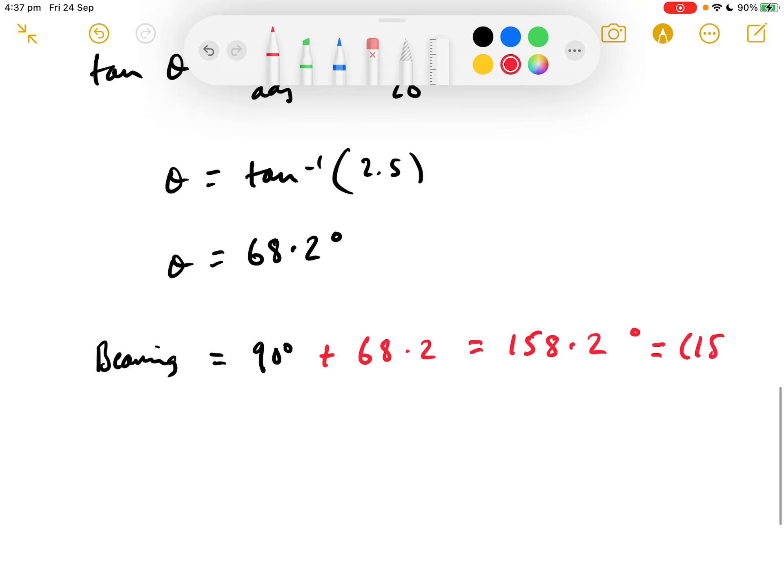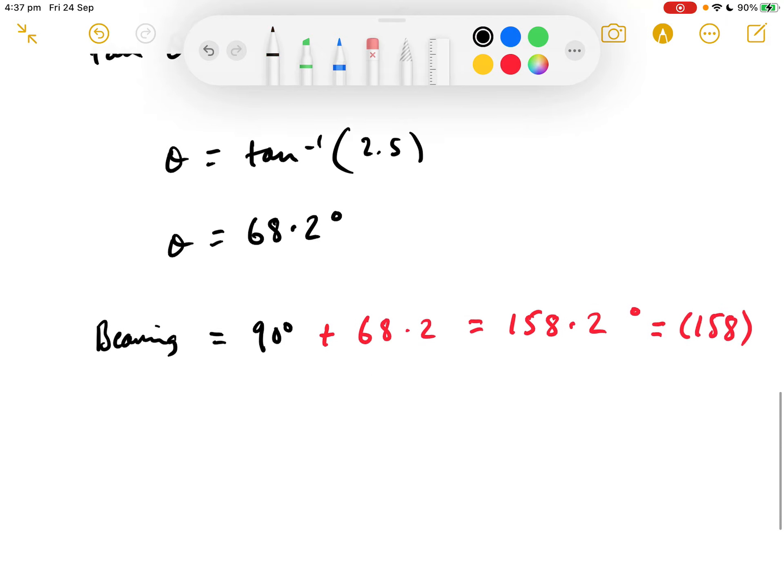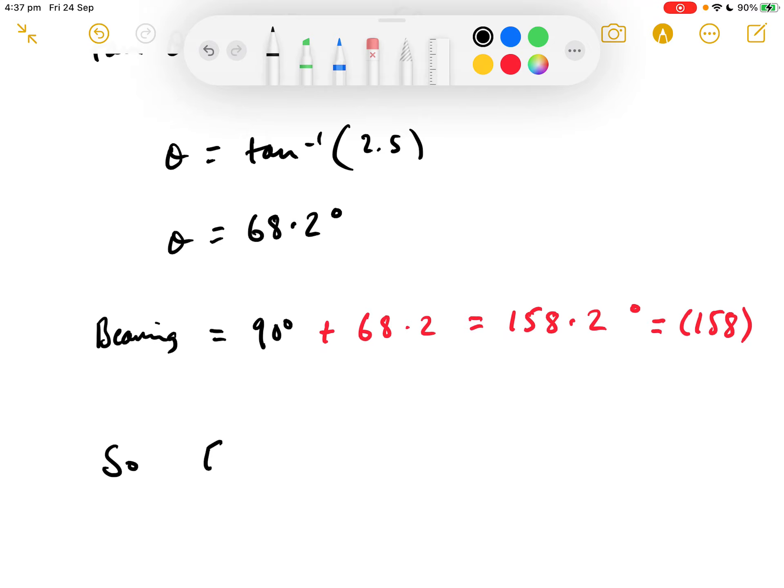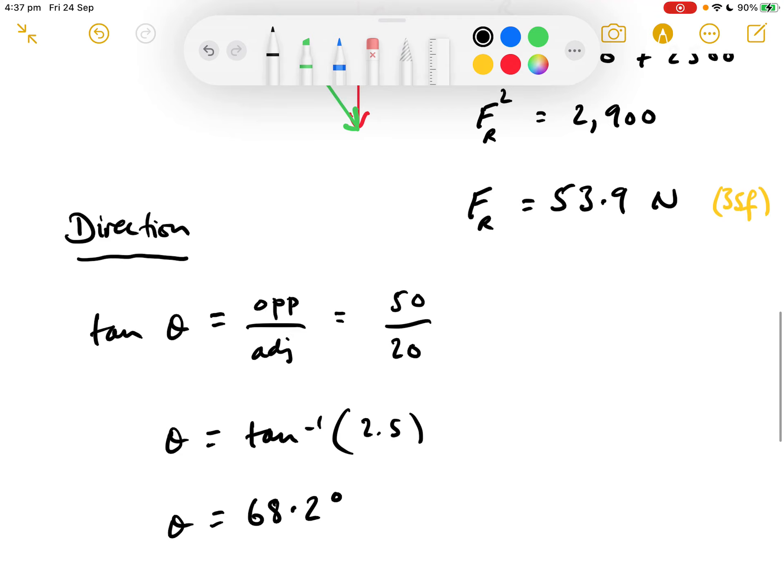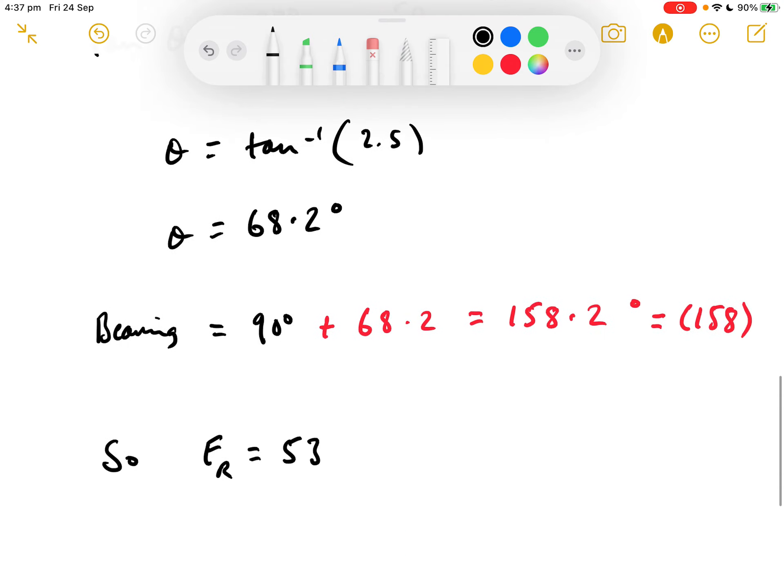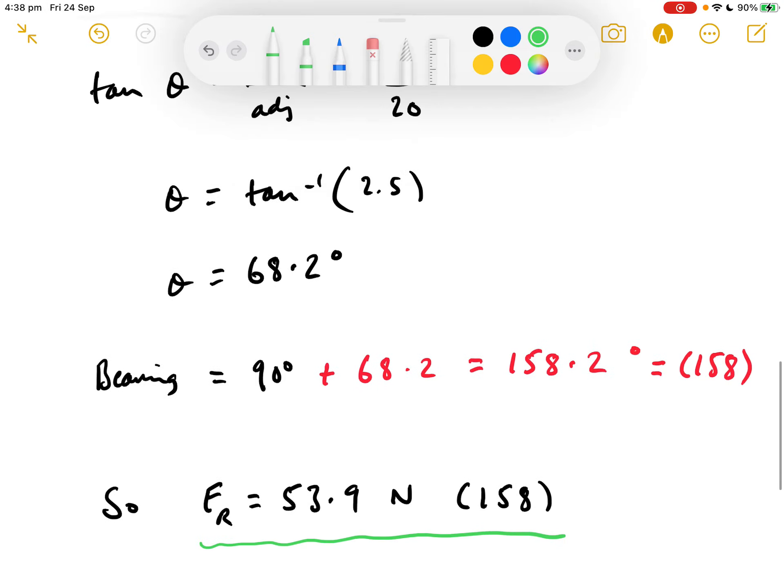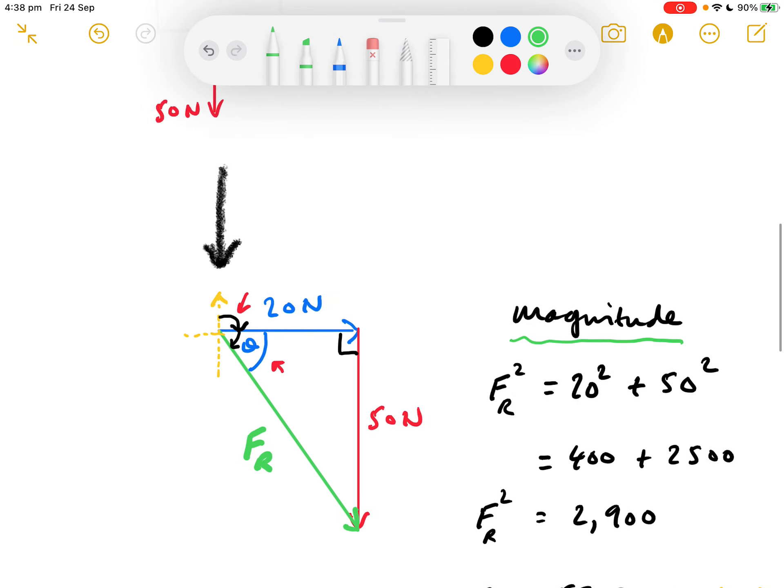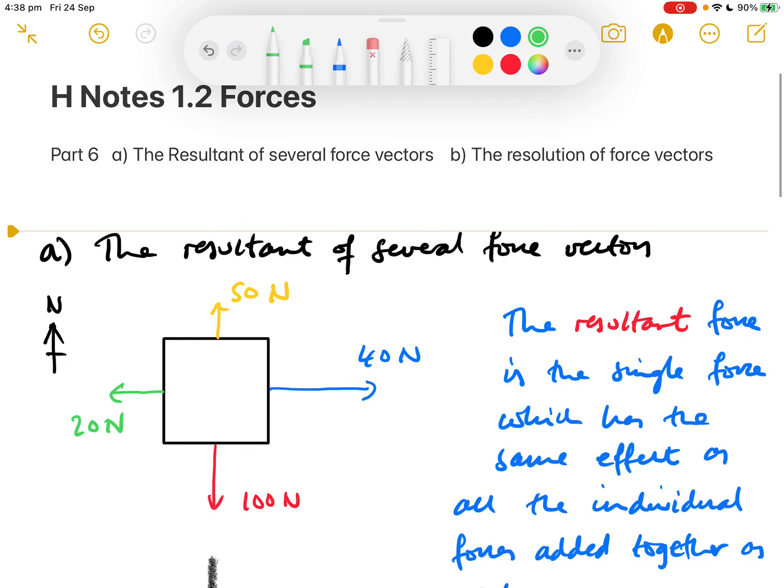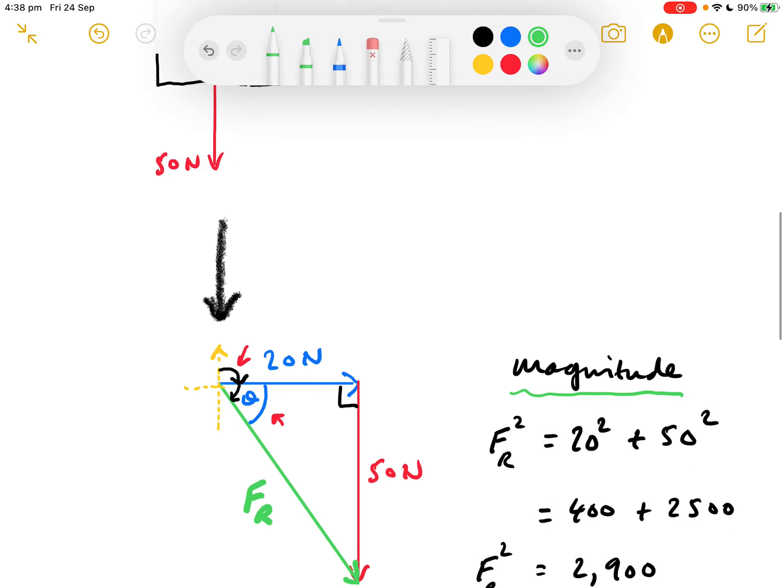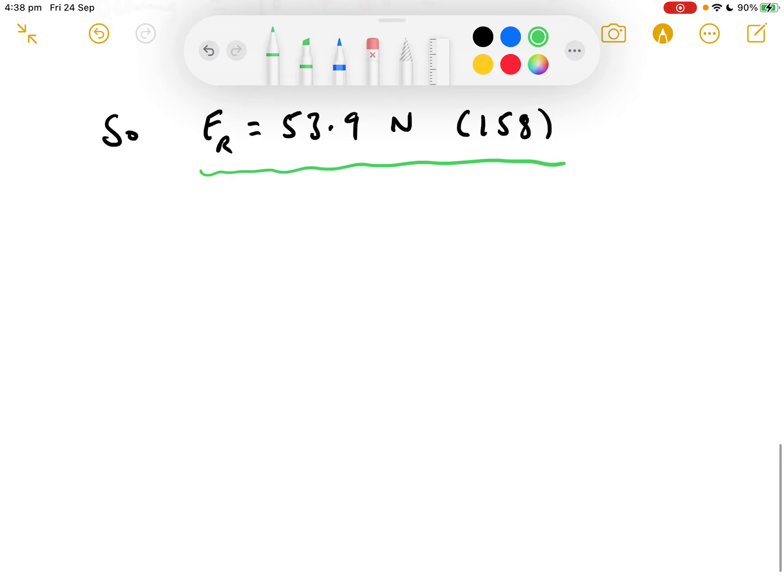Now we're not quite finished because that's the angle theta itself, but we need the bearing. So the bearing is the 90 degrees plus the theta, which is 68.2. That's 90 plus 68.2 equals 158.2 degrees. We always quote a three-figure bearing, so that becomes 158 using normal rounding. So finally, the resultant force is 53.9 Newtons to bearing 158. That's how you add forces tip to tail to get the resultant of several forces.